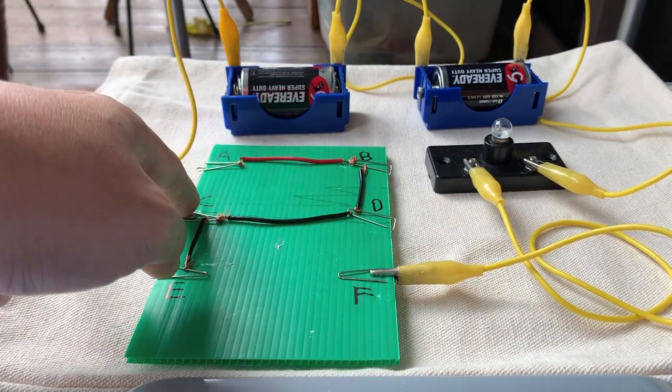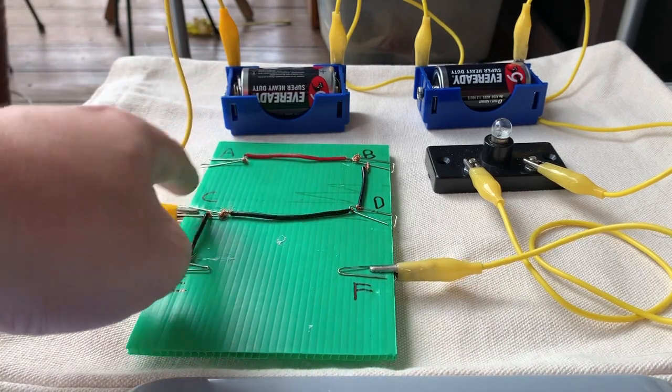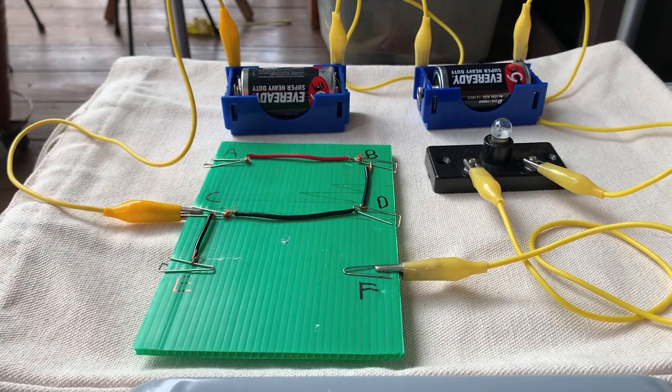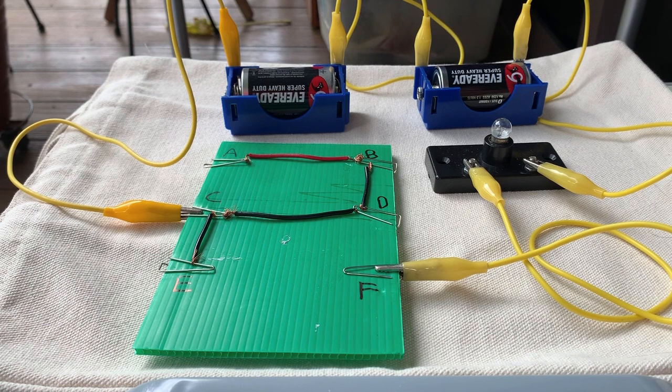Whether directly or indirectly, there's no wire connecting to C. So this is an open circuit. The light bulb doesn't light up.